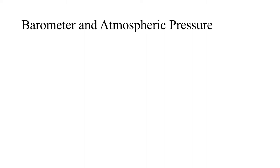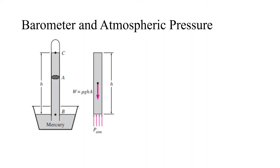So what is the barometer and how will you measure the atmospheric pressure? You can see that this is a vessel in which mercury is filled and this is atmosphere exposed to atmosphere, and this position is B.